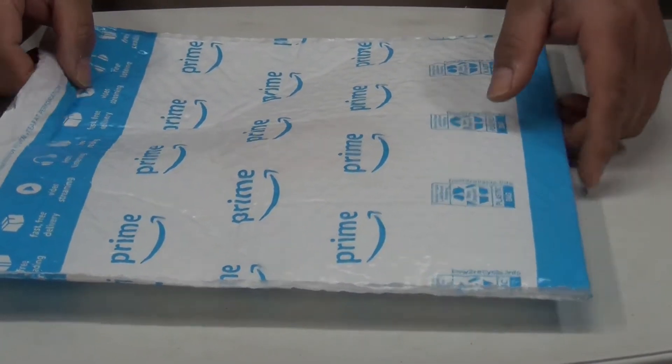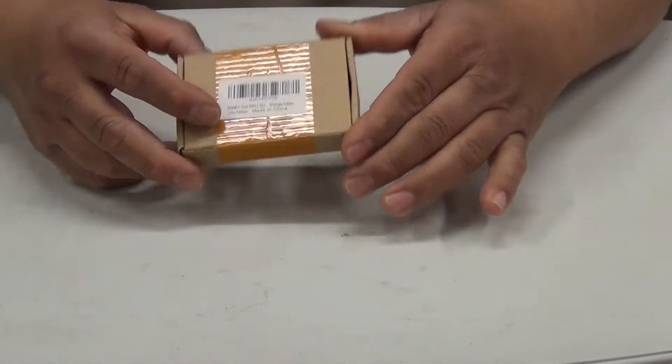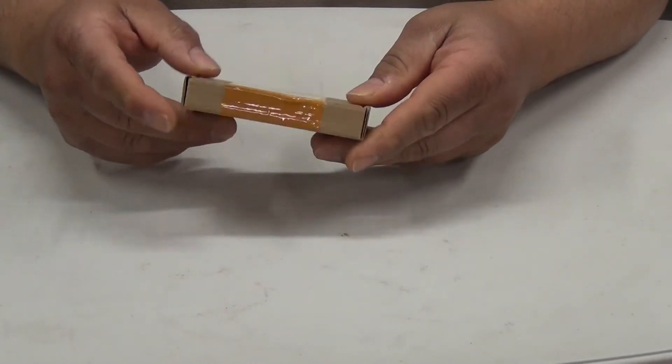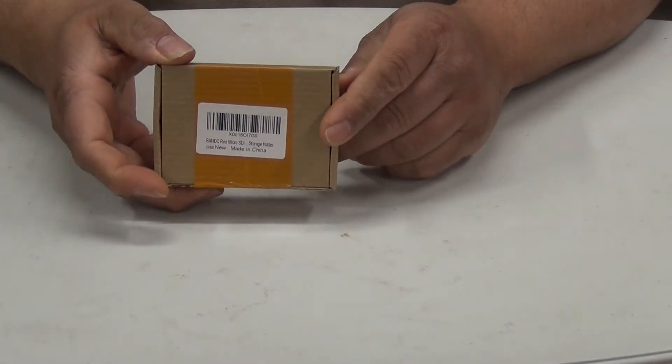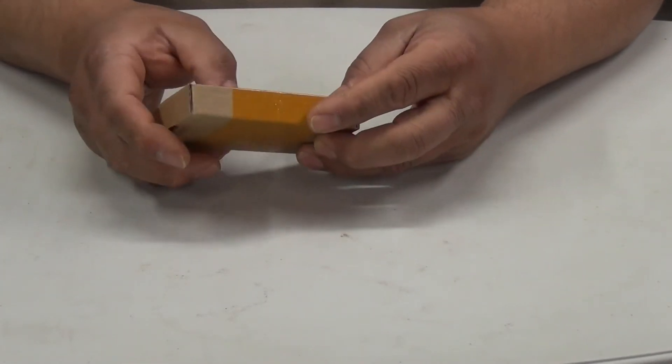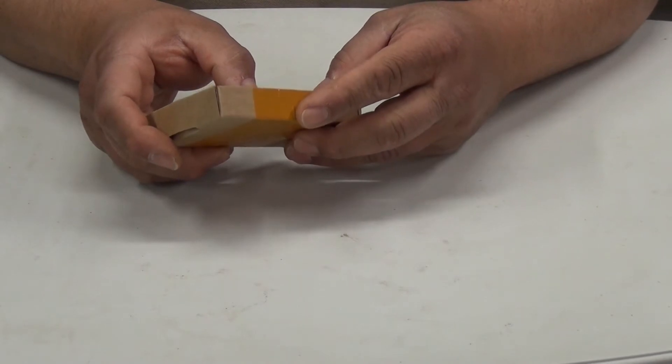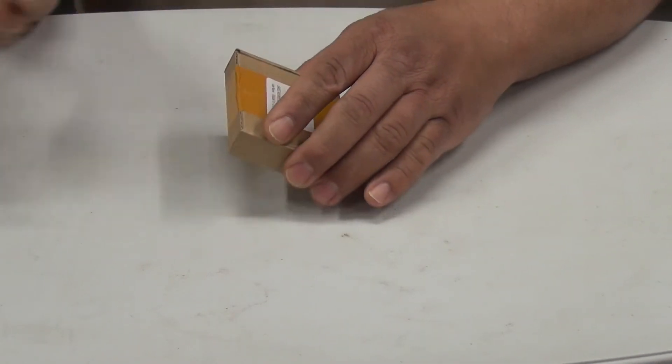Let's see how it looks. First, the box it came in. Simple box with tape around it, barcode, description, and a made in China label.